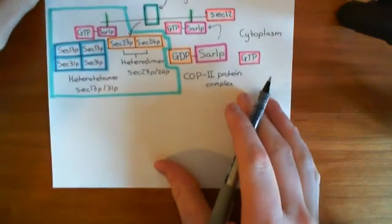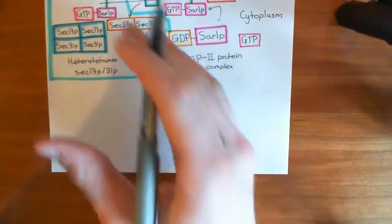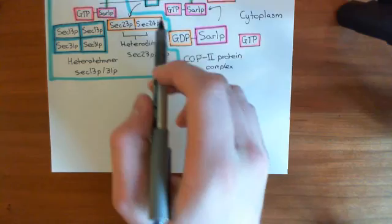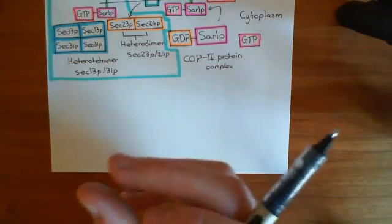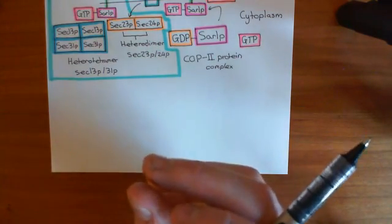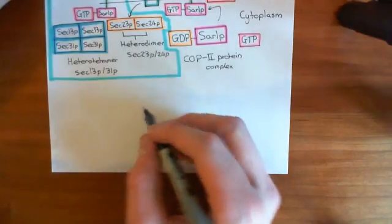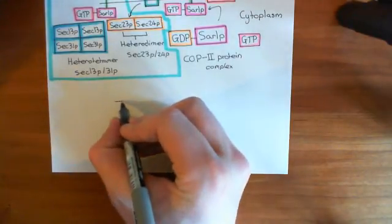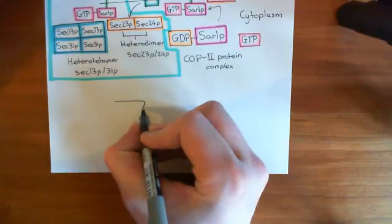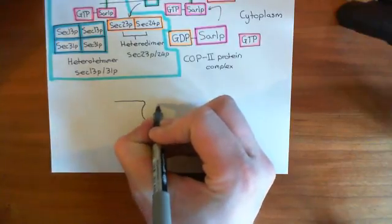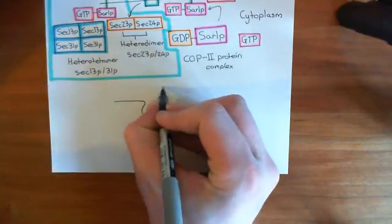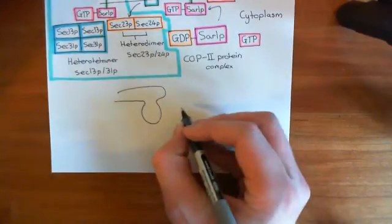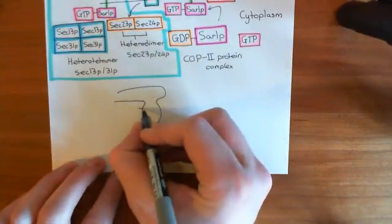So now let's draw a more macroscopic picture. So we'll represent the COP-2 protein complex as one blob now, rather than showing all its individual components. So what's going to happen is, if this is your endoplasmic reticulum, what's going to happen, basically, is you're going to start pinching off a vesicle. And the reason is, if we draw this going around here, what you'll have is loads of cargo proteins.